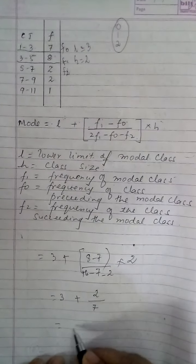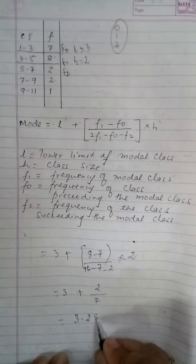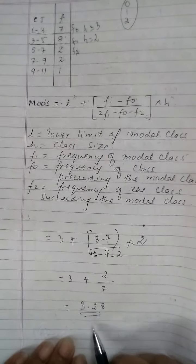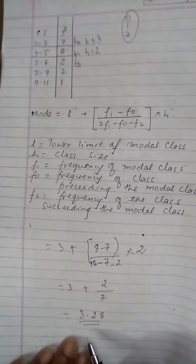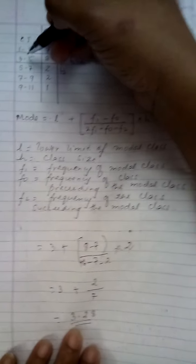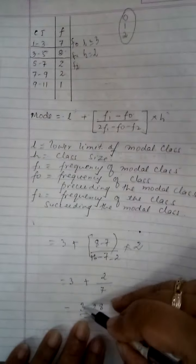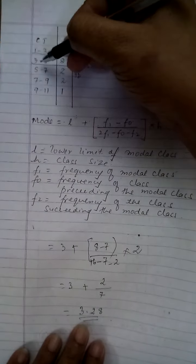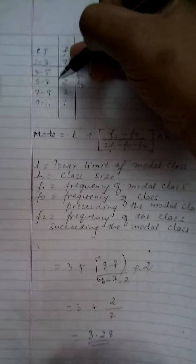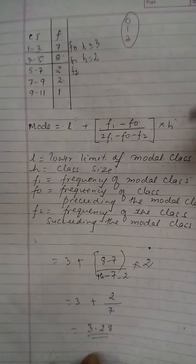And when I solve this further I'm getting the mode as 3.28. So the mode becomes 3.28. Now the most important thing what you have to remember in mode is that the mode will always lie inside your modal class. That is a way of rechecking your answer. My modal class was 3 to 5 and the value of mode is 3.28. That means your mode cannot be less than 3 and it cannot be greater than 5. I repeat again, your mode will always lie inside your modal class. Thank you.